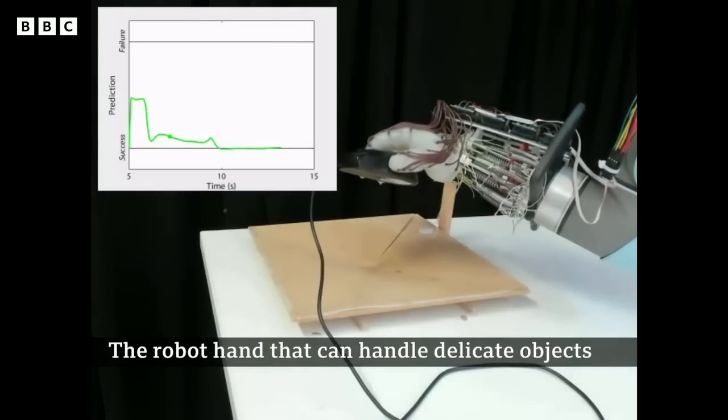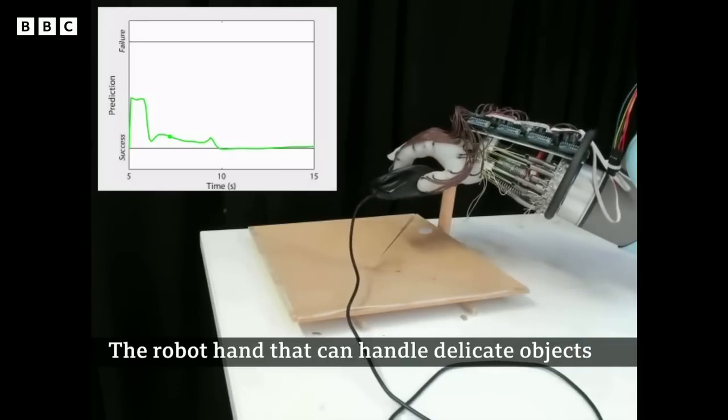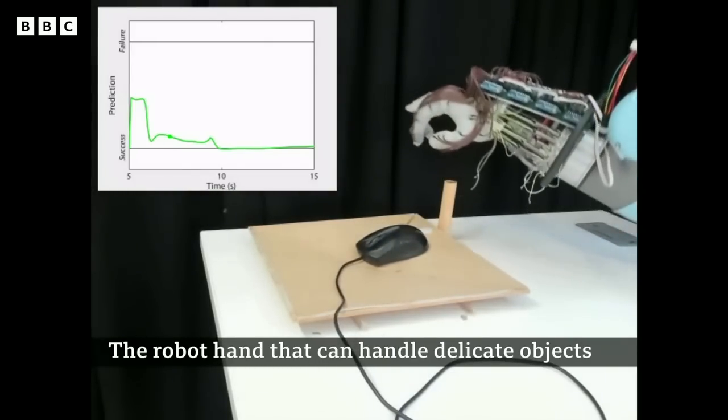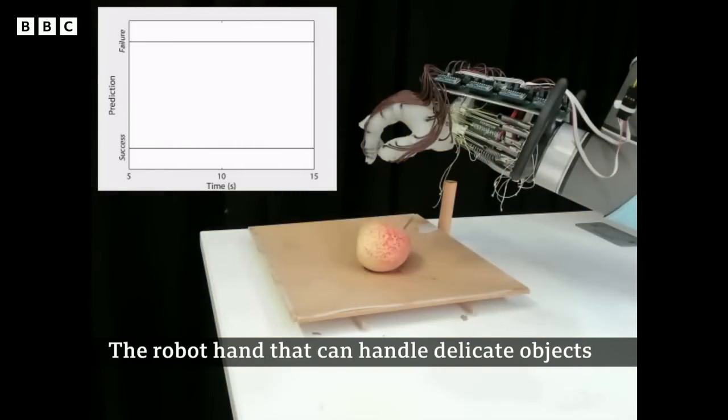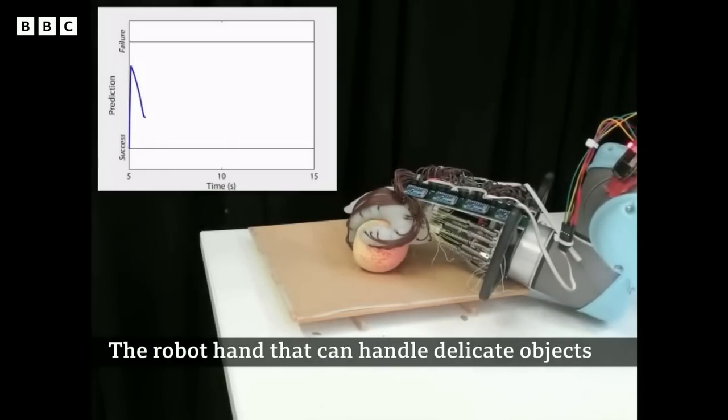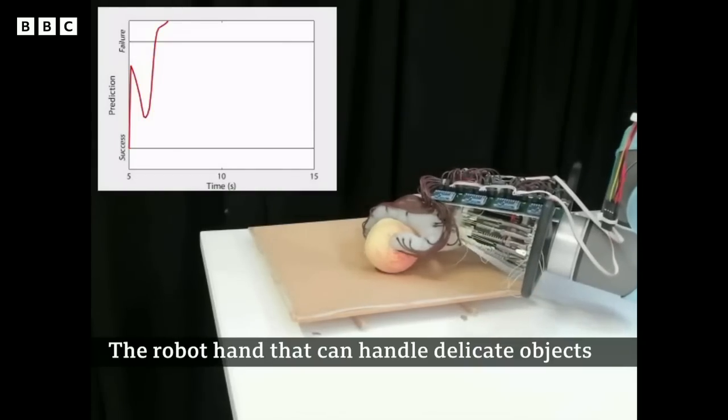I mean, the human hand is so complex, isn't it? I know with this one, what you've developed, it has wrist movement, but not particular finger movement. In terms of the next stages, how quickly do you think you can get those sensors working around the fingers and make even more progress?